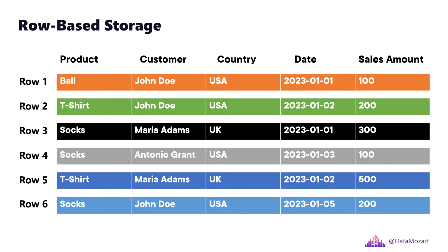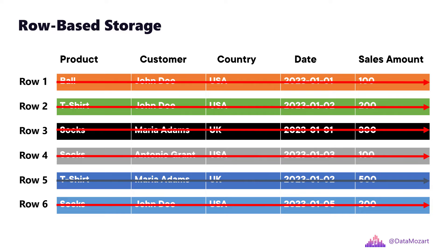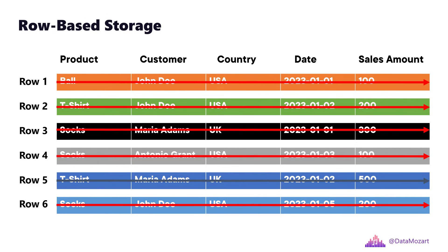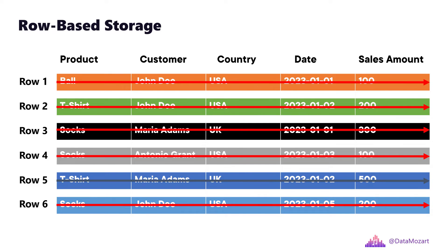So to answer the question — how many users from the USA bought a t-shirt? — the engine has to do something like this. Essentially, we just need the information from two columns: product for t-shirts and country for the USA. But the engine will scan all five columns. This is not the most efficient solution — I think we can agree on that.